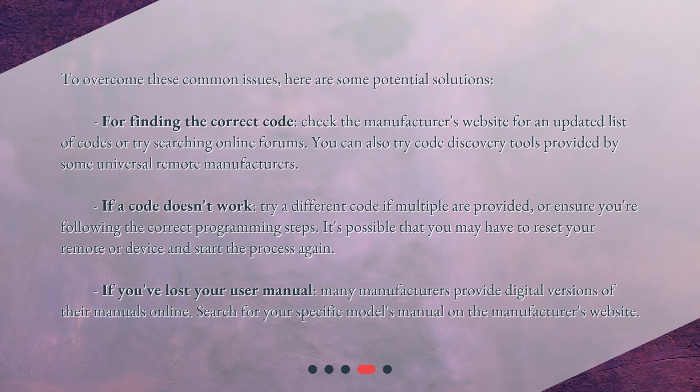If a code doesn't work, try a different code if multiple are provided, or ensure you're following the correct programming steps. It's possible that you may have to reset your remote or device and start the process again. If you've lost your user manual, many manufacturers provide digital versions of their manuals online — search for your specific model's manual on the manufacturer's website.